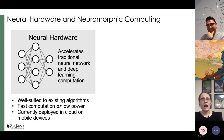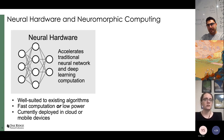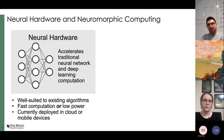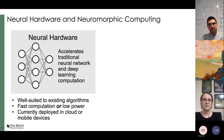I'm going to briefly talk about neural hardware first, primarily as a contrast point to neuromorphic computing, and then I'll spend the rest of the talk focused on neuromorphic computing. Neural hardware systems are those that accelerate traditional neural network and deep learning computation. They are built to do today's algorithms very, very well. An example of a neural hardware system is Google's Tensor Processing Unit, the TPU. These systems tend to have very low power or very fast computations, targeted towards training or inference operations.